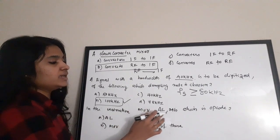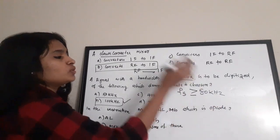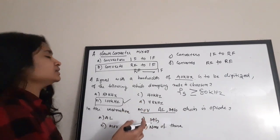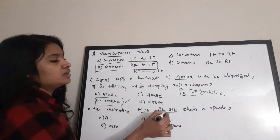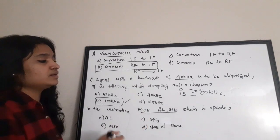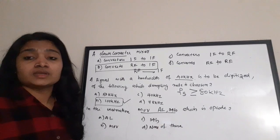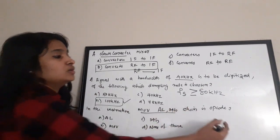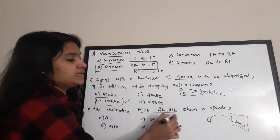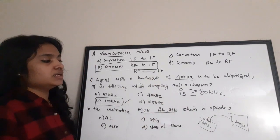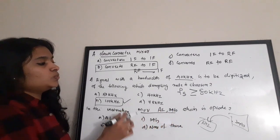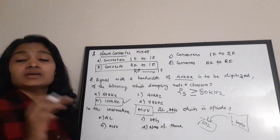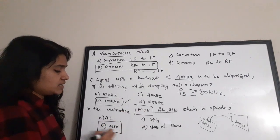Next question: in the instruction MOV AL, 34H — which is the op-code? In a MOV instruction, there is a source and a destination. Here we are moving the immediate value 34H to the register AL — AL is the destination, 34H is the source. The op-code (operation code) is MOV. The correct answer is option B: MOV is the op-code.